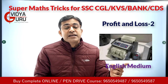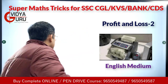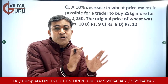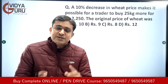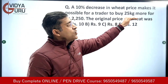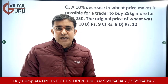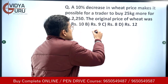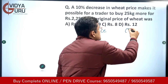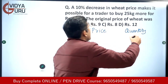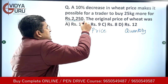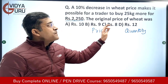Now the first question: a 10 percent decrease in wheat price makes it possible for a trader to buy 25 kg more for rupees 2250. The price has changed, and because of a decrease in price the quantity has also changed — now the trader can buy 25 kg more. The total money he is investing is rupees 2250. We have to find the original price of wheat.